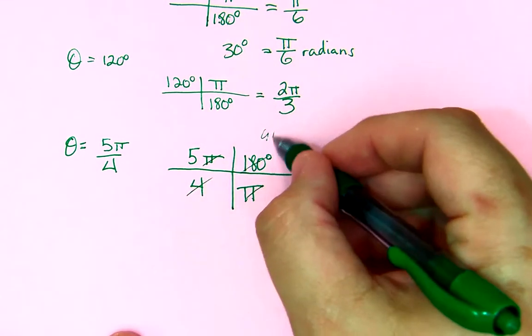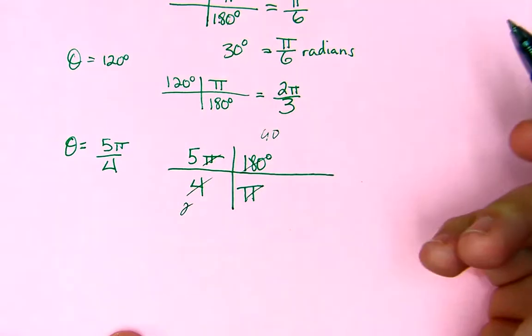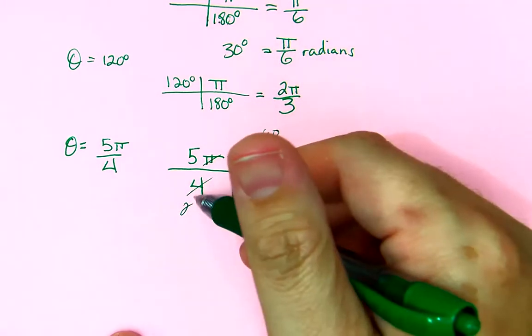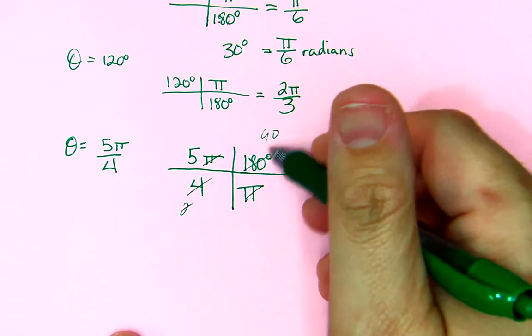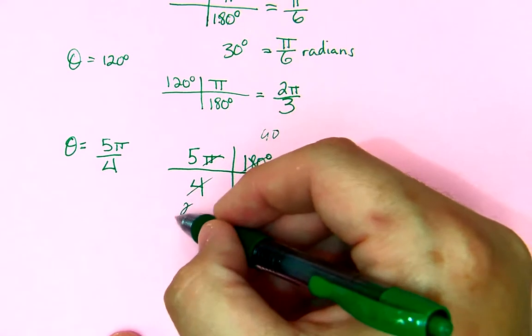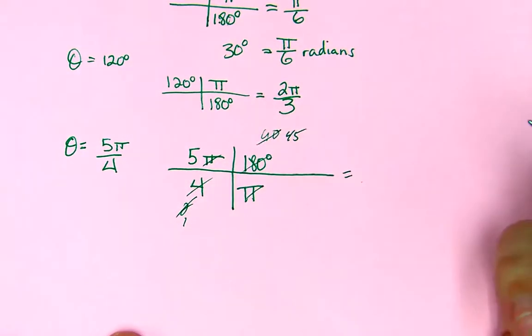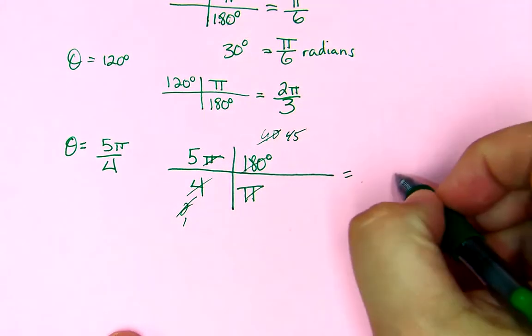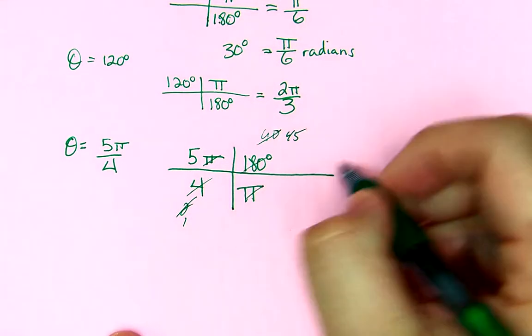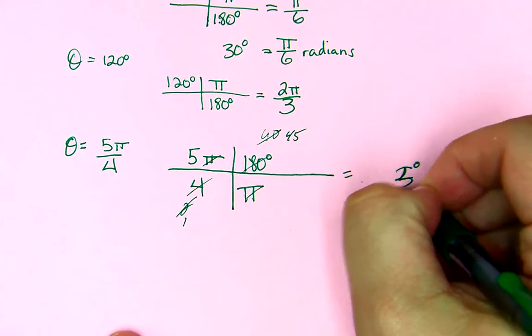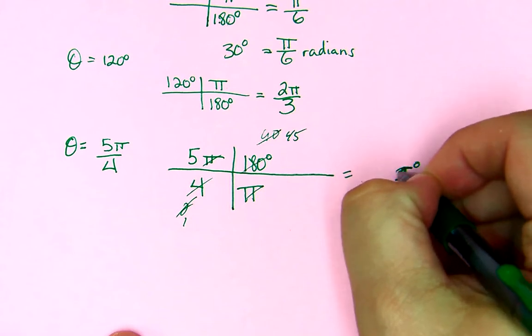4 goes into 180 90 times. And then we get, or, 2 goes into 4 two times, goes into 180 90 times. 2 goes into 2 one times, goes in there 45 times. Now, we have 5 45s. So, 5 times 5 is 25. And, oops, that's a 5. That's not a 2.